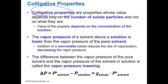The vapor pressure of a solvent above a solution is lower than the vapor pressure of the pure solvent. If you add something that's non-volatile — that is, it doesn't evaporate off — it reduces the rate of vaporization and decreases the vapor pressure. Vapor pressure is where liquid is leaving the surface. The difference between the vapor pressure of the pure solvent and the solvent in a solution is called the vapor pressure lowering.